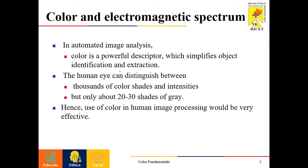In automated image analysis, color is a very powerful descriptor which simplifies object identification and extraction. Our human eye can distinguish many color shades — maybe thousands of color shades and intensities — but it is capable of discriminating only about 20 to 30 shades of gray levels. Hence, using color in image processing would be a very effective tool for various analysis.